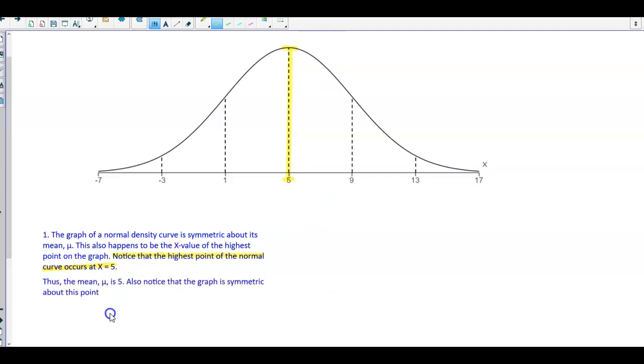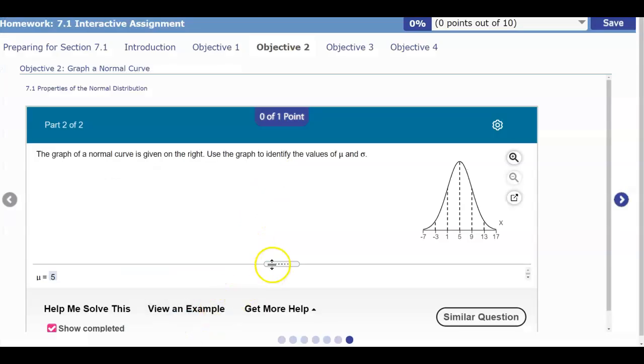Therefore, notice that the highest point of the normal curve occurs at x equals 5. So the mean μ is 5, and also notice that the graph is symmetric at this point. You can see our result: the mean is equal to 5.